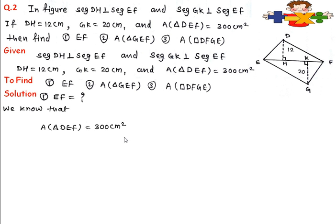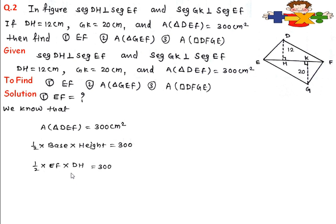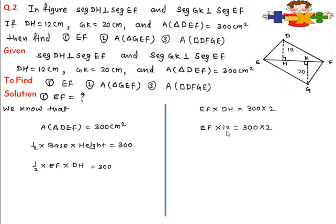Solution for EF: we know the area of triangle DEF is 300 square centimeters. The area of a triangle is 1/2 times base times height, where base is EF and height is DH, equals 300. Shifting the 2 to the other side: EF times DH equals 600. Putting in DH equals 12: EF equals 600 upon 12, which is 50 centimeters.